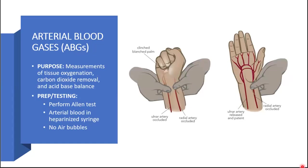One important test that must be done before you take your sample is to perform the Allen test. The Allen test checks for collateral circulation. You apply pressure to the arteries on the wrist where you want to take the sample for several seconds, which will stop blood flow to that hand. The hand will become cool and pale, and then blood is allowed to flow to the artery that will not be used — usually the ulnar artery, found on the outer part of the wrist or little finger side.